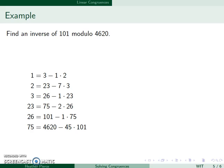These are those same equations, and we're going to start at the top now and work our way down. This second equation has a 2, and so does this equation. We're going to change this 2 based on this equation. That gives us 3 minus 1 times 23 minus 7 times 3.